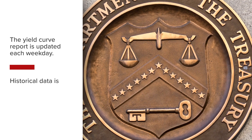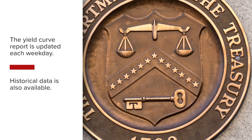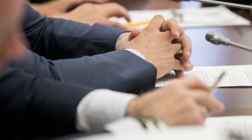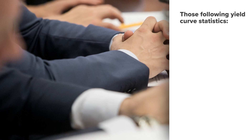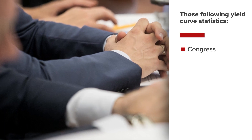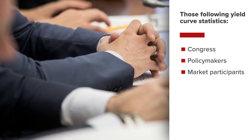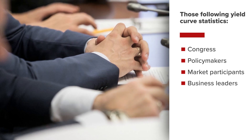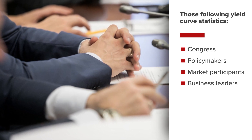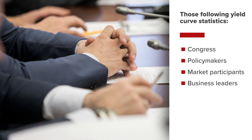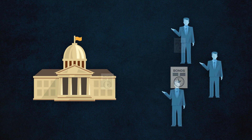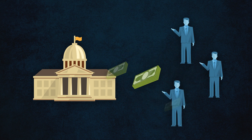Historical data are also available. The U.S. Treasury Department wants a strong economy and publishes daily yield curve statistics so that Congress, policymakers, market participants, and business leaders can have timely and reliable information concerning U.S. Treasury bonds. When the U.S. government needs funds to cover expenses, selling Treasury bonds at auctions is a way to raise cash.